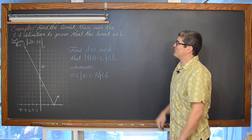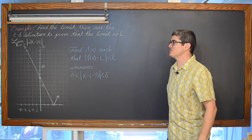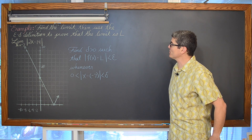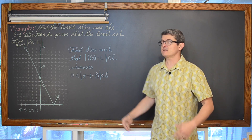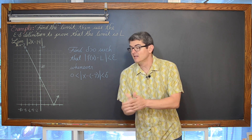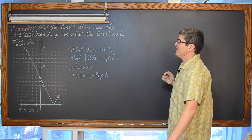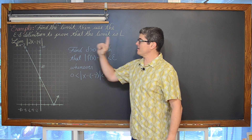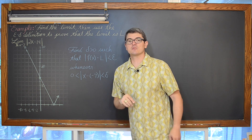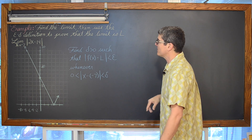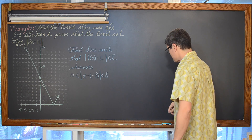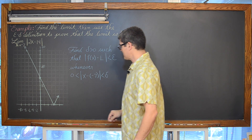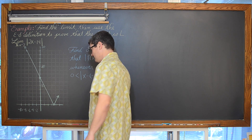Last example: find the limit, then use the epsilon-delta definition to prove that the limit is actually L. This time we have an absolute value function. We are going to find the limit as x approaches negative 7 of the absolute value of 2x minus 14.